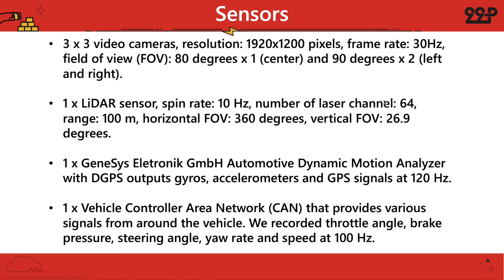There are four different types of sensors on the vehicle. There are three video cameras with a resolution of 1920 at a frame rate of 30 hertz — one on the center of the vehicle, one on the left, and one on the right. There's also a LiDAR sensor at a spin rate of 10 hertz with a field of view of 360 degrees and a vertical field of view of 26.9 degrees. There are also gyros, accelerometers, and GPS signals at 120 hertz. There's also a vehicle control area network, which is a CAN device that provides various signals from around the vehicle — things like throttle angle, brake pressure, steering angle, yaw rate, and speed, all captured at 100 hertz.